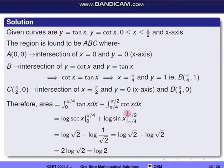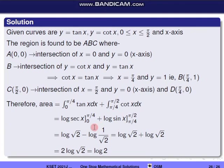The integral of tan x is log|sec x| and the integral of cot x is log|sin x|. Substituting limits: log sec(π/4) − log sec(0) + log sin(π/2) − log sin(π/4) = log√2 − 0 + 0 − log(1/√2) = log√2 + log√2 = 2 log√2 = log 2. So the area is log 2.